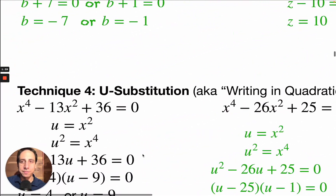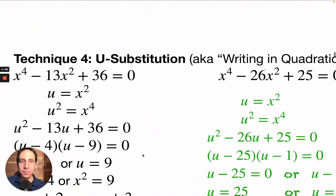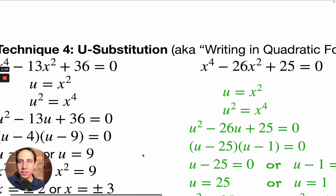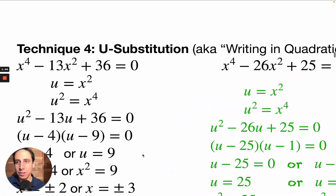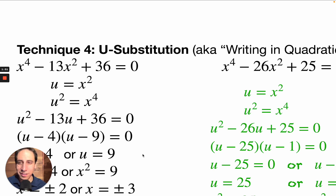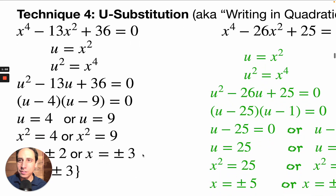U-substitution — also known as writing in quadratic form — is a technique used a lot in calculus. Over the years people have been introducing it earlier and earlier, and I'm really happy to show it to you now so that by two years from now, it'll be a breeze.